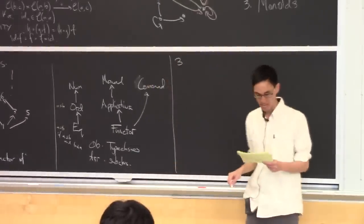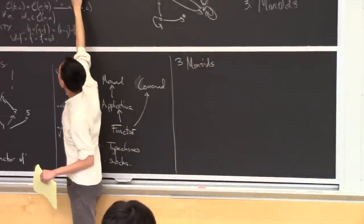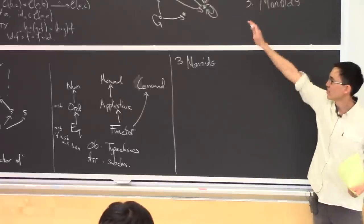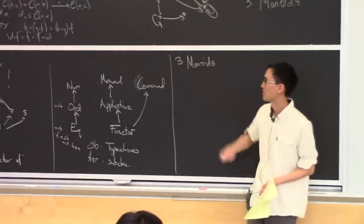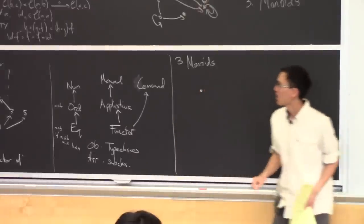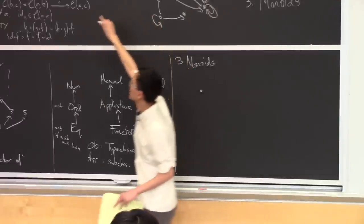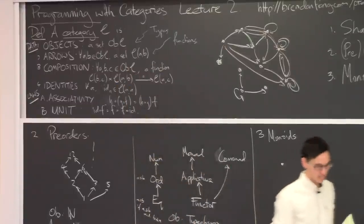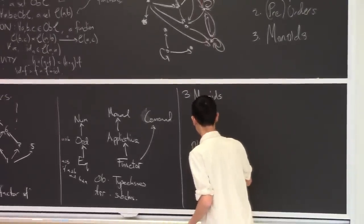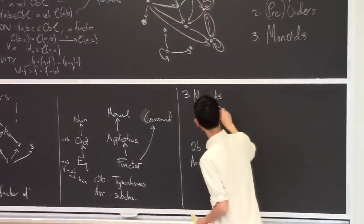On to another class of categories: monoids. Pre-orders are categories where the arrow structure is very simple. Monoids are a class of category where the objects are very simple — in fact, they're categories with only one object. For example, I might have one category where there is one object, and because there's only one object, there's only one hom set to worry about. I'll choose the natural numbers for that set, so objects is a single point, and arrows equals the natural numbers — I have an arrow from this point to itself called zero, two, and so on.